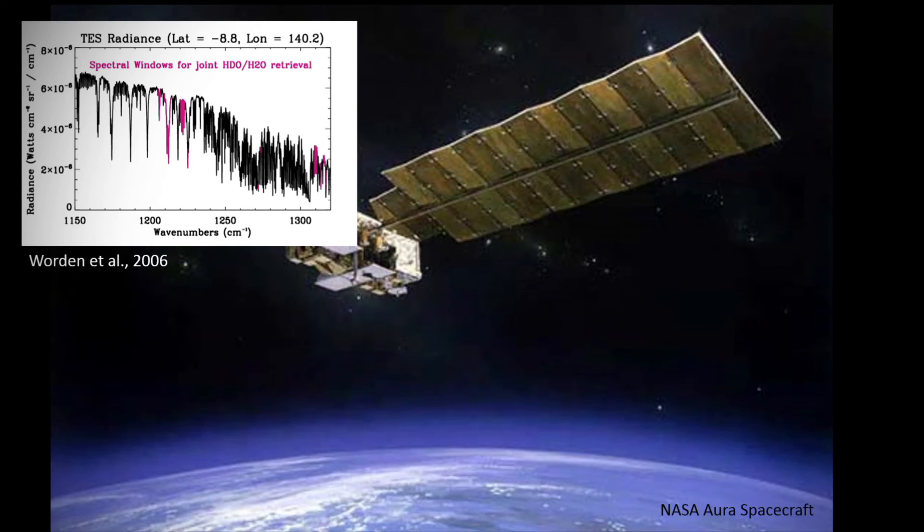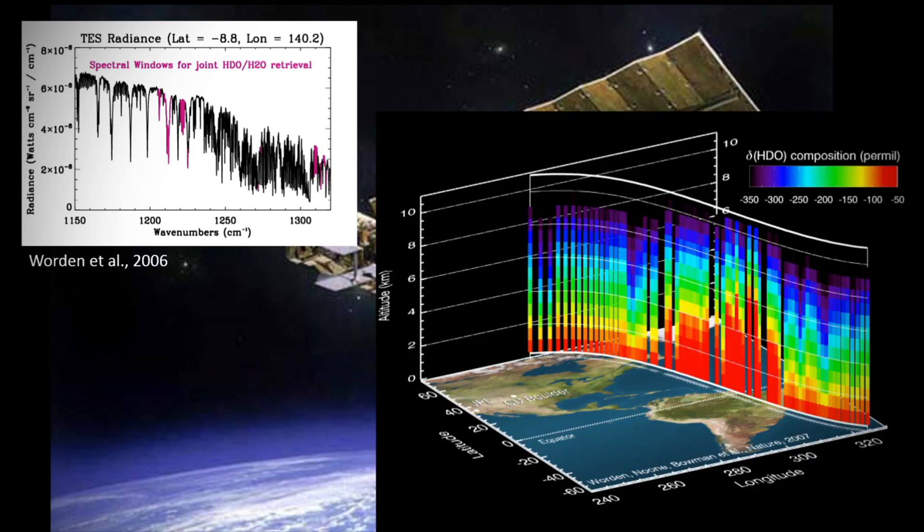By comparing the HDO emission to the emission from other gases, particularly H2O, regular water, the isotope ratio can be derived. And ultimately the satellite can obtain estimates of the isotope ratio as profiles as it orbits in this figure from south to north along an orbit track.